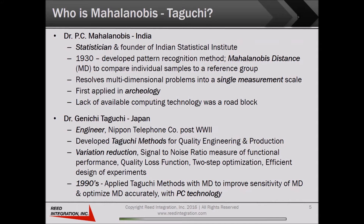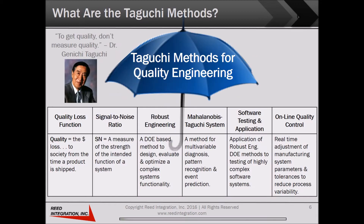So who is Mahalanobis Taguchi? Dr. Mahalanobis was the founder of the India Statistical Institute and invented a new method for numerical pattern recognition in the 1930s called Mahalanobis Distance. Although innovative, it wasn't very useful without desktop computers to handle the required matrix math. In the 1990s, Dr. Taguchi, developer of Taguchi Methods, helped Dr. Mahalanobis to incorporate optimization and prediction into the approach. Using readily available desktop computing, they were now able to deploy what is now known as the Mahalanobis Taguchi System, or MTS.